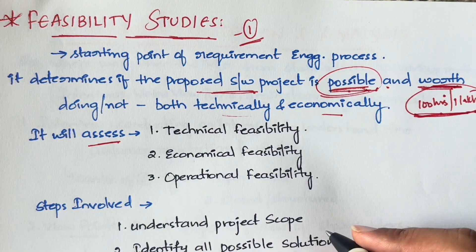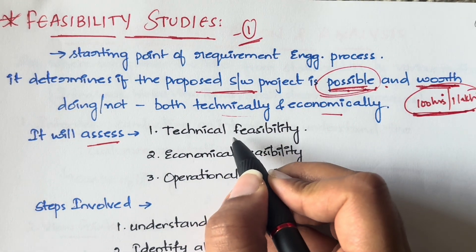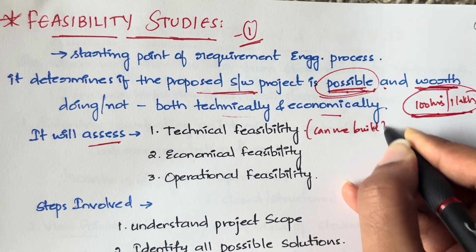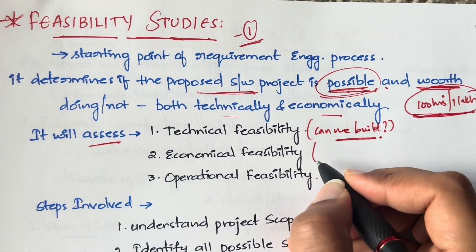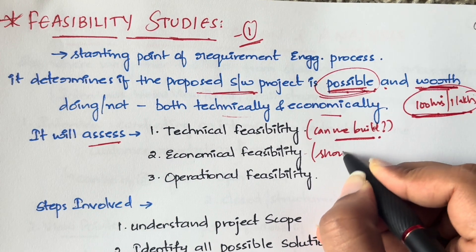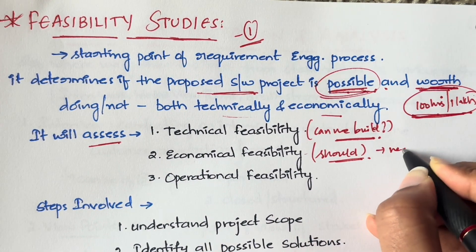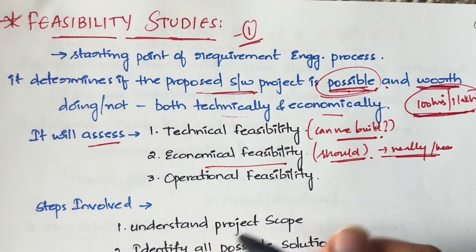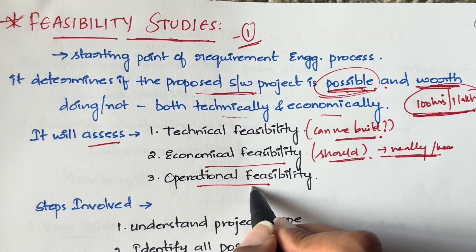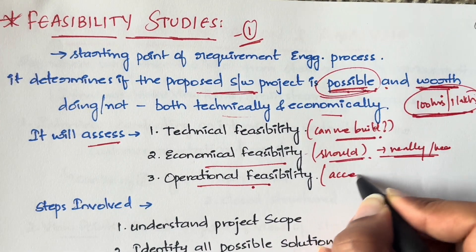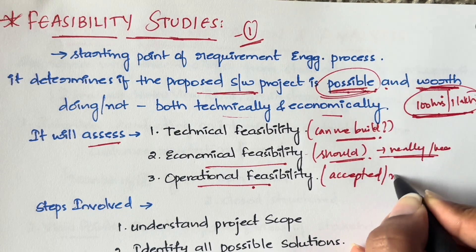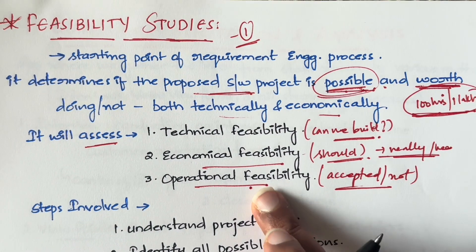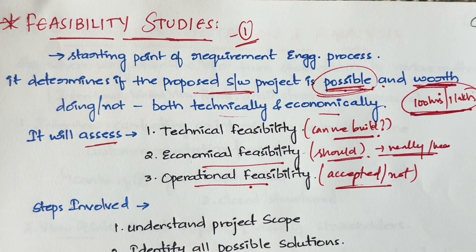The feasibility study assesses different kinds of feasibilities. The first is technical feasibility — can we actually build it? Next is economical feasibility — should we build it, is it worth it, is it really needed? And then there is operational feasibility, which checks whether customers will accept and like the solution.